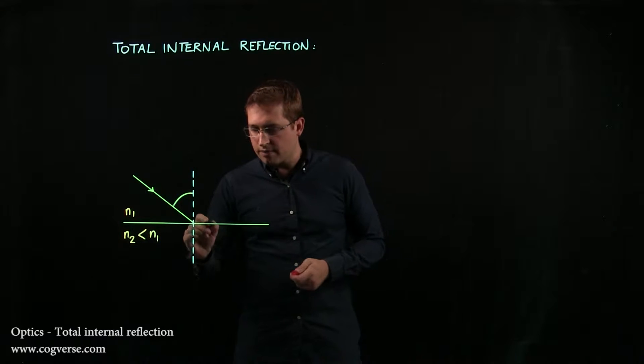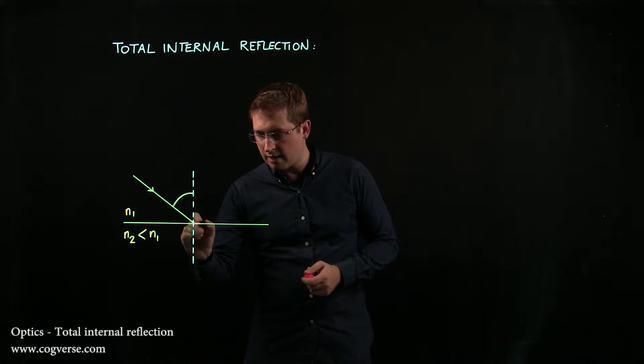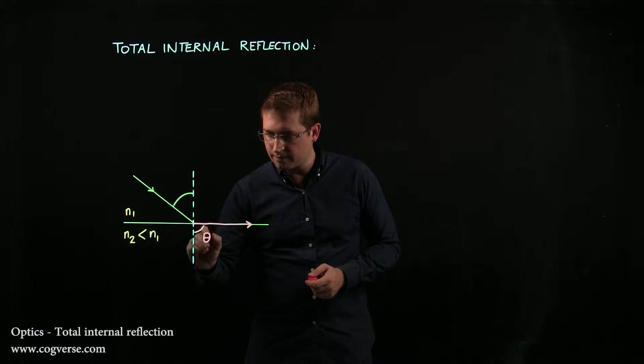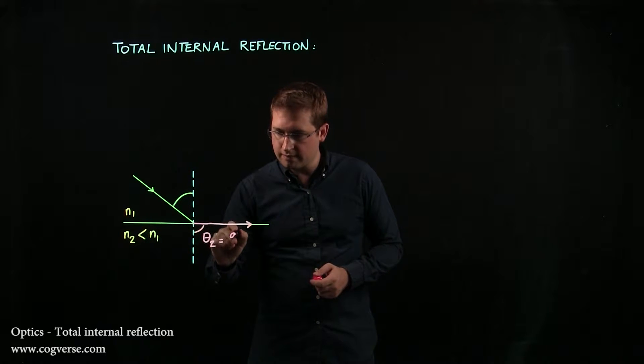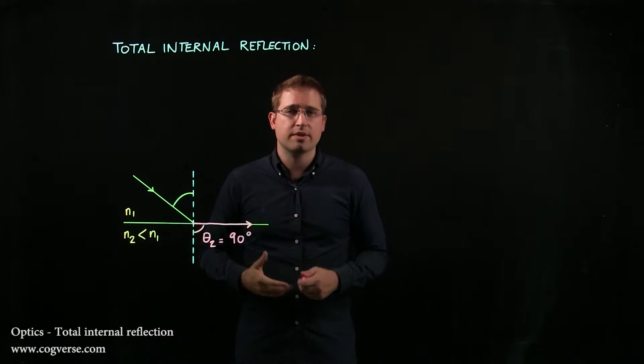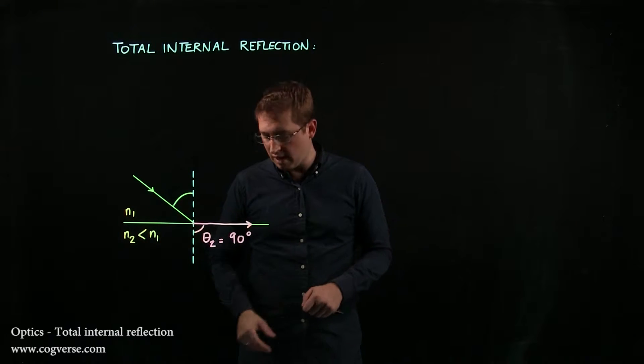For example, here, if it bends away at 90 degrees and theta 2 is equal to 90, then the light does not enter the second medium, and there is no refracted ray.